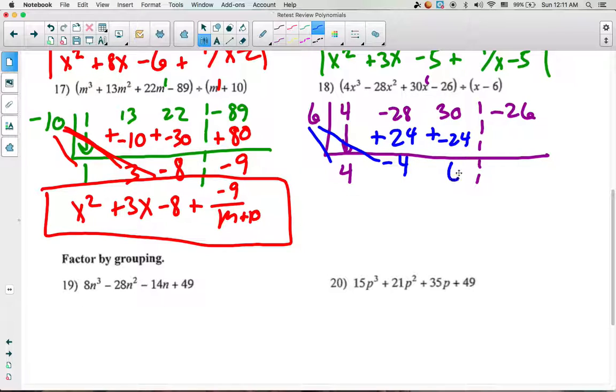Add together. 30 plus negative 24 is 6. Then we'll multiply. 6 times 6 is 36. We'll add negative 26 plus 36 is a positive 10.